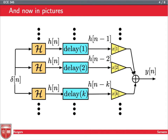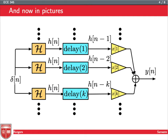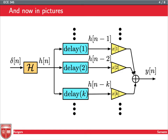We have taken h and swapped it with the delays using time invariance. Now you can see each of these delta of n's — these copies of delta of n — are going into h. The output of h with input delta of n is just going to be h of n, and we're going to get the same h of n at all of these locations. So we can simplify: we take delta of n, apply h to get h of n — this is the impulse response.